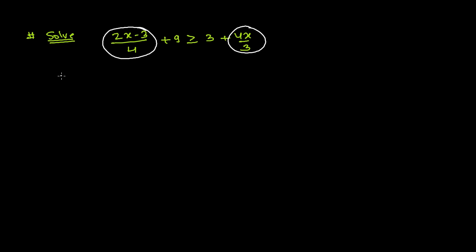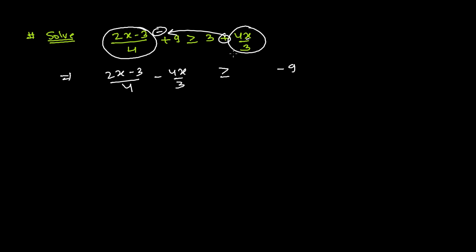So first I'm writing 2x minus 3 divided by 4, and I need to bring the x-containing term to the left-hand side, so it becomes minus 4x divided by 3. On the right side, this plus 9 moves to the other side as minus 9, and this 3 comes from the original equation.